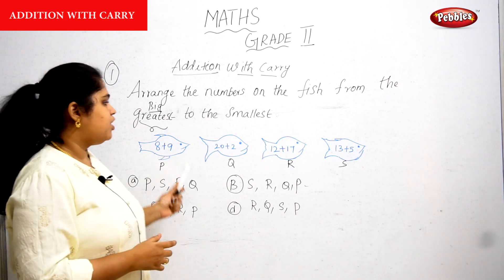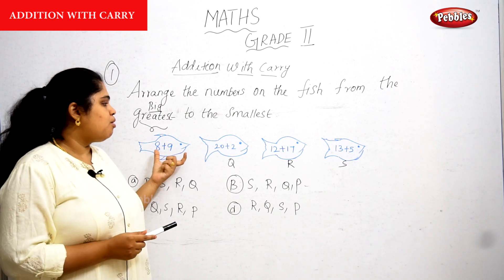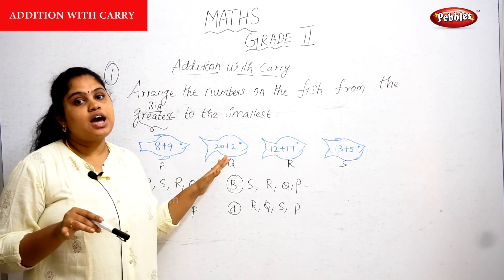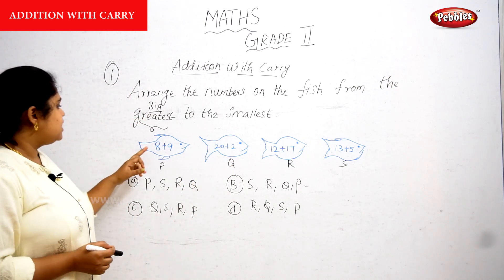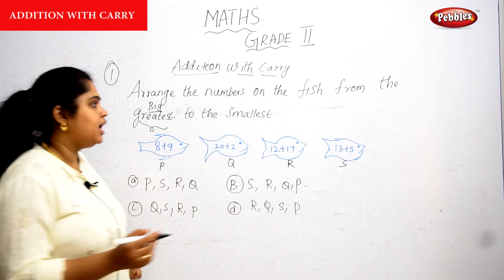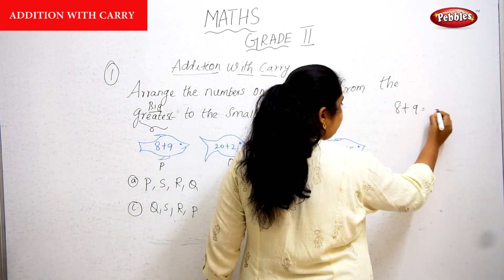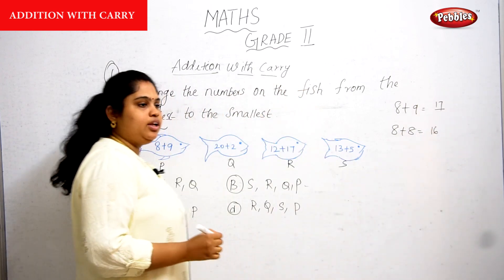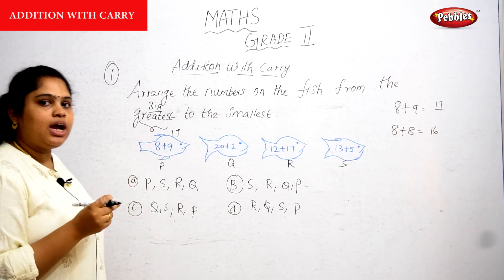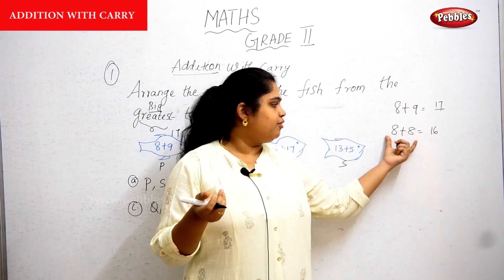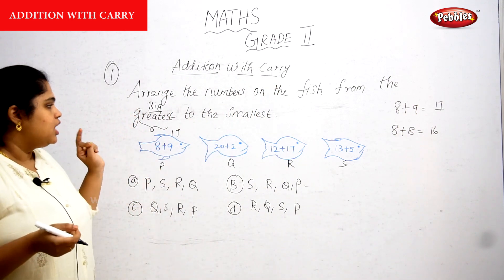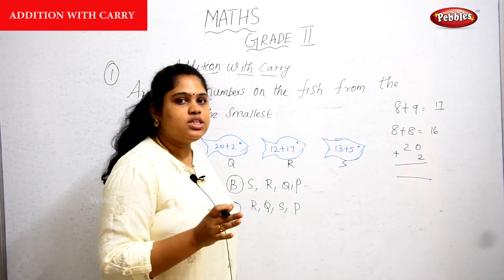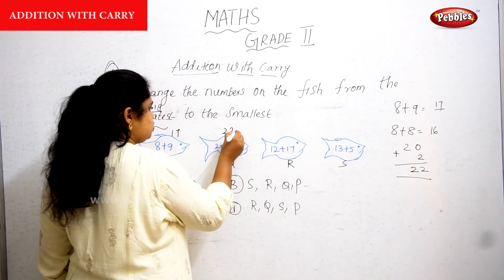To reorder we need to perform the addition first, so we know which fish has the greatest number. For 8 plus 9: we know 8 plus 8 is 16, so adding one more gives 17. Next, 20 plus 2 — any number added with 0, the number itself is the answer — so 22.